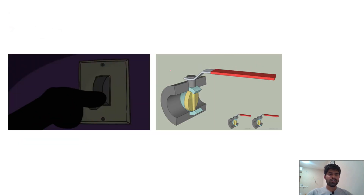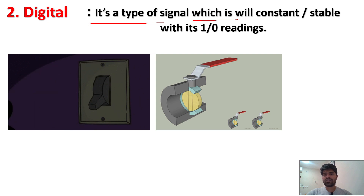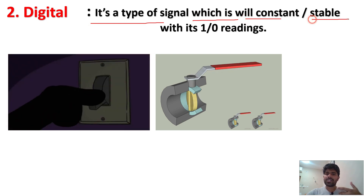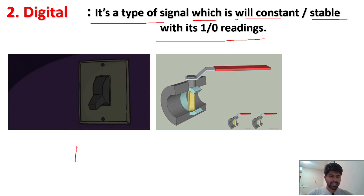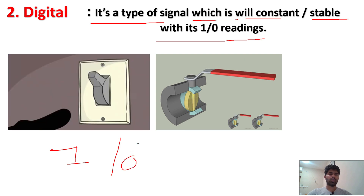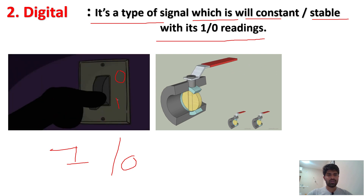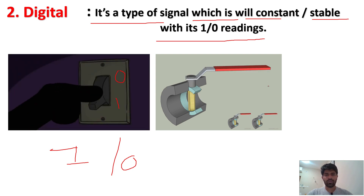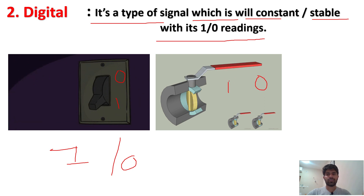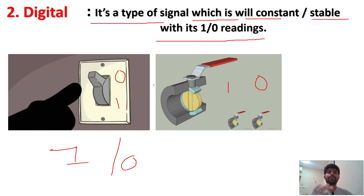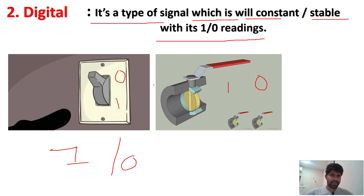What is meant by digital? It is a type of signal which is constant and stable with its one or zero readings. In digital, whether it will be one or it will be zero only. For example, a switch on and off — if you make it on, it is one; if you make it off, it is zero. Same with a valve: if it is opening, it will be one; if it is closing, it is zero. Digital signals are stable with their one or zero readings.